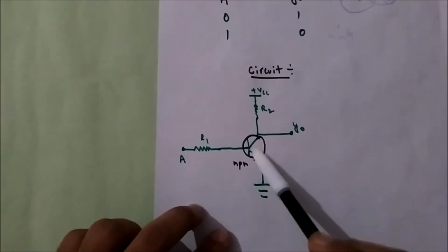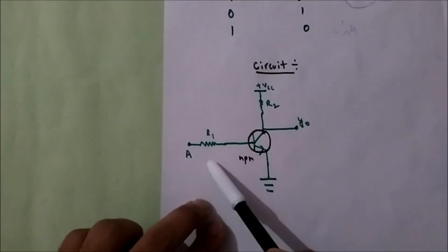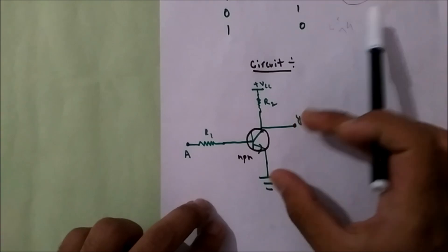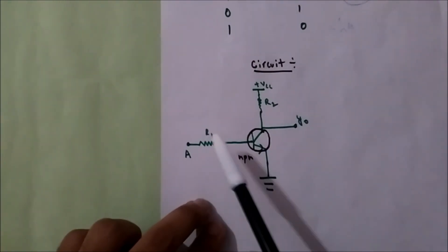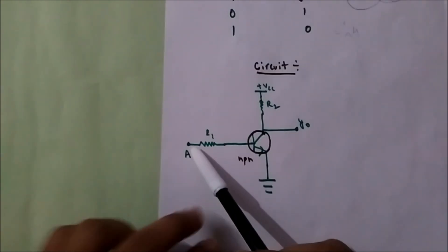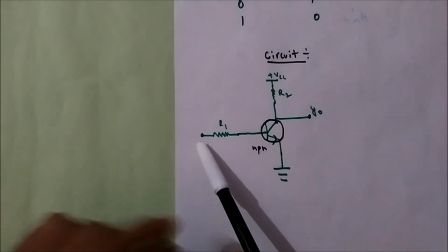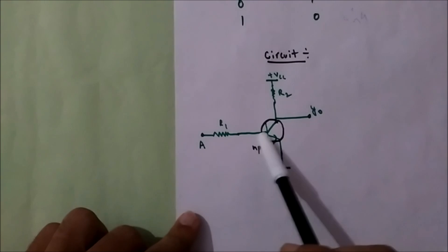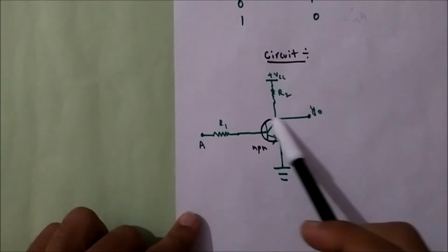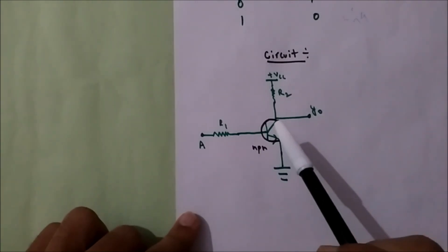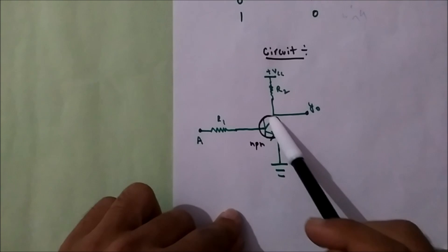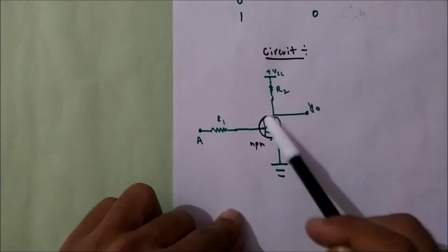Here is an NPN transistor. To the base we give input, and we take output from the collector terminal. These two resistors are connected — one resistor is directly connected to positive supply, and this resistor is connected to the input. If I give zero here, that means the base of the transistor will get zero volts or no current. If there is no current to the base terminal, the transistor will act as an off switch — it will be in off condition.